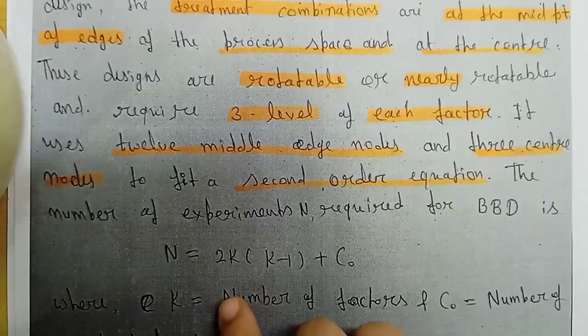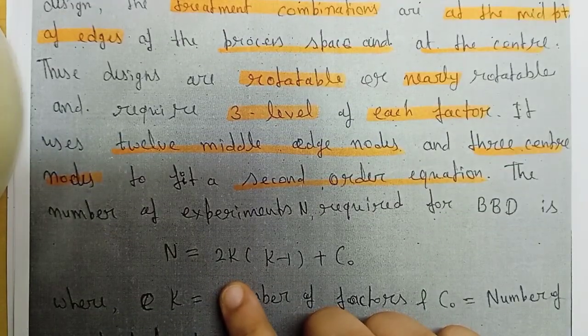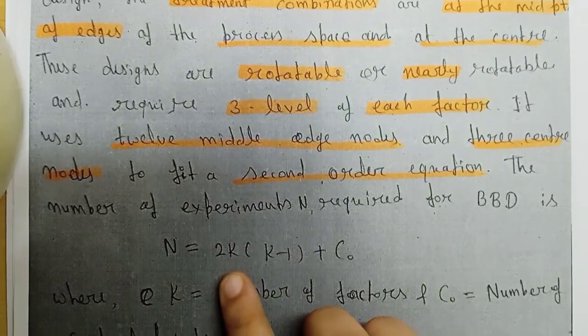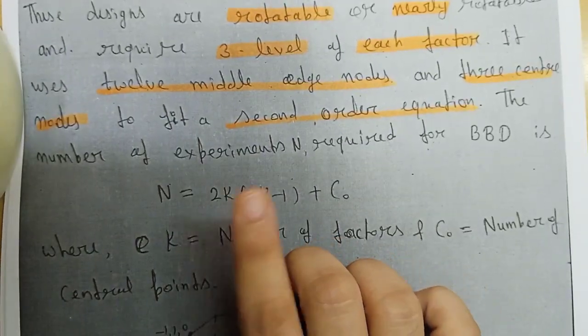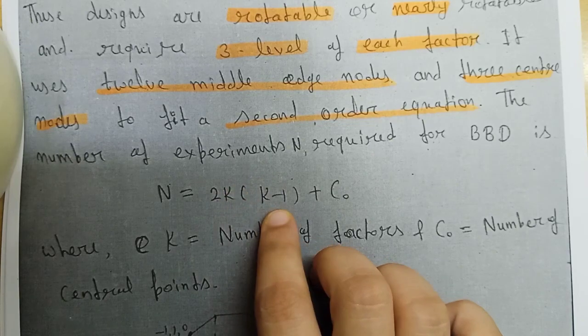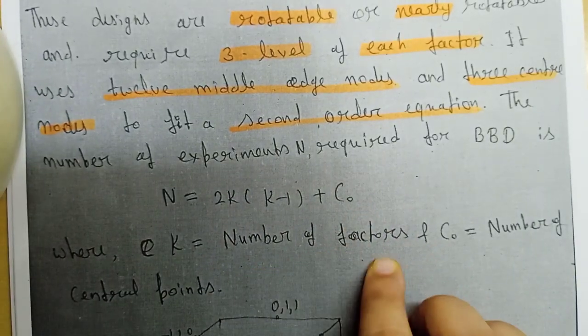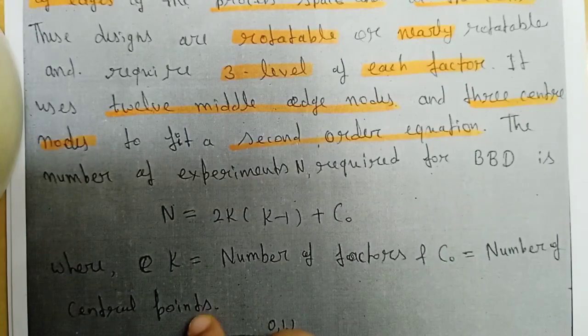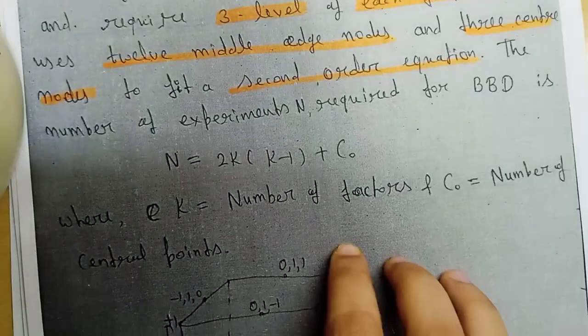The number of experiments required is given by the formula n = 2k(k-1) + c0, where k is the number of factors and c0 is the number of central points.